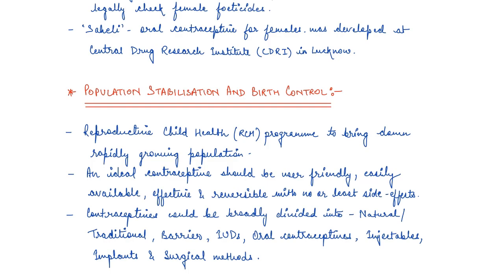In the last century, there has been all-round development in various fields to improve quality of life. But increased health facilities had an explosive impact on population growth. The Reproductive Child Health (RCH) program came to bring down the rapidly growing population. An ideal contraceptive should be user friendly, easily available, very effective, and reversible with no or least side effects — so that if someone wants to conceive later, they can.